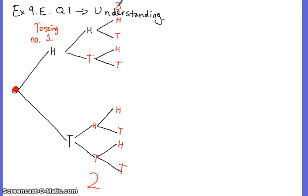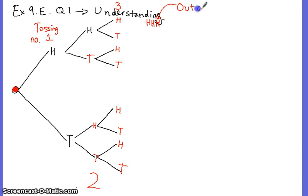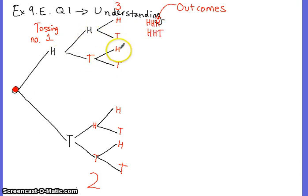If I gave you a coin and said, toss that coin three times, it could come out as head, head, head. This column is really all the possible outcomes of that experiment. It could come out as head-head-head, head-head-tail, head-tail-head, or head-tail-tail.